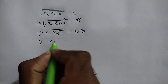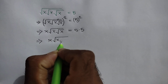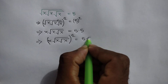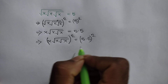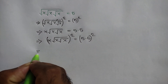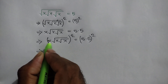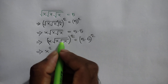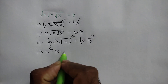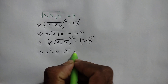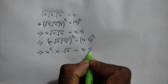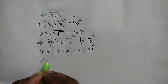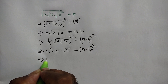Again squaring both sides we can write: x times square root of x times square root of x, whole squared, is equal to 5 times 5, whole squared. The square cancels out the square roots, so it will be remaining: x squared times square root of x is equal to 5 times 5 squared.